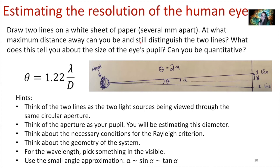We're going to find just the right distance where you're on the verge of being able to resolve them. You're going to have two quantities: the distance between those lines you drew, and how far away you have to be from them to just barely distinguish them. With those two pieces of data, we can ask: what does this tell us about the size of your pupil using the Rayleigh criterion? This is open-ended estimation, and that's okay — it gets you thinking more creatively about problems that don't have an exact number.